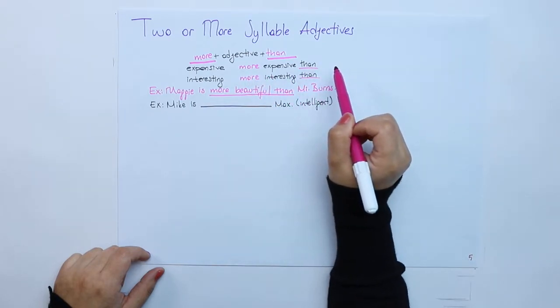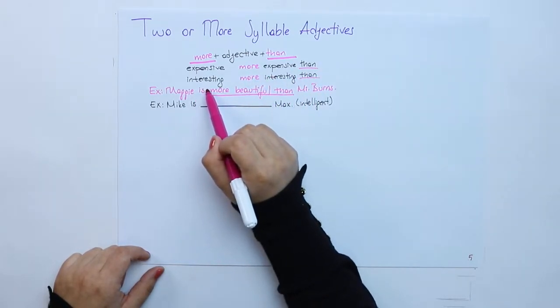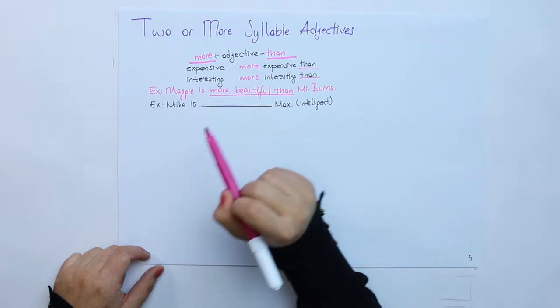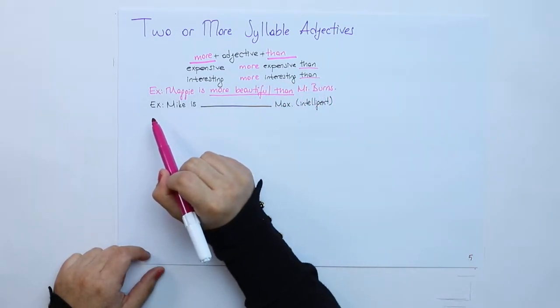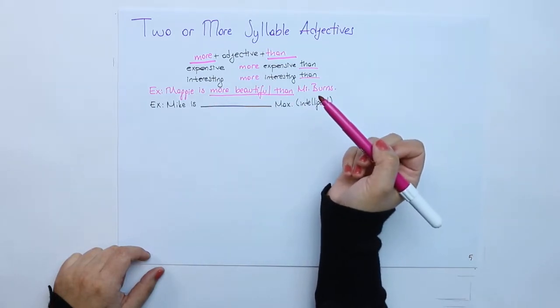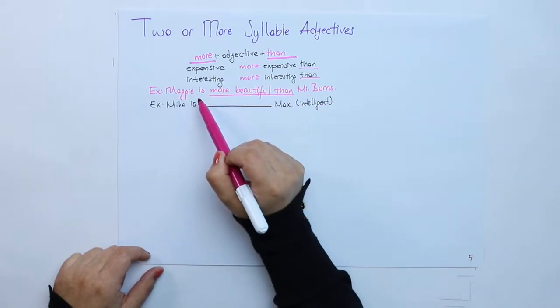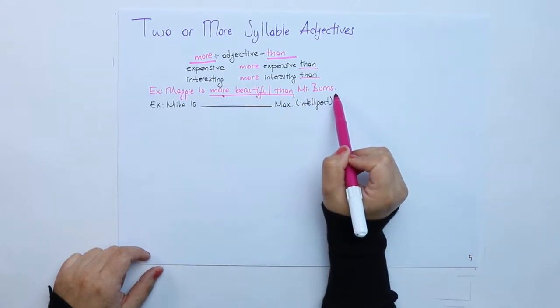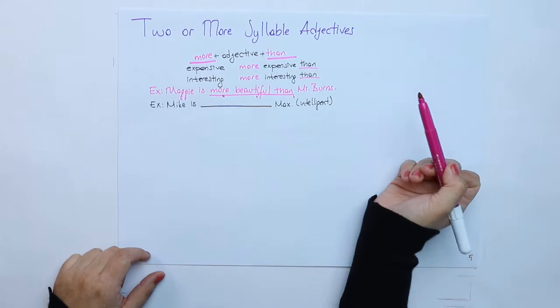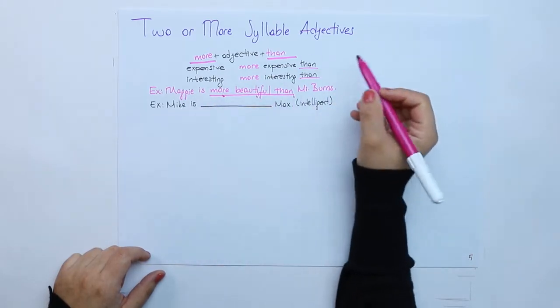I use more expensive than. Interesting is the same, more interesting than. Let's look at our example and use them in the sentence. Maggie is more beautiful than Mrs. Burns.